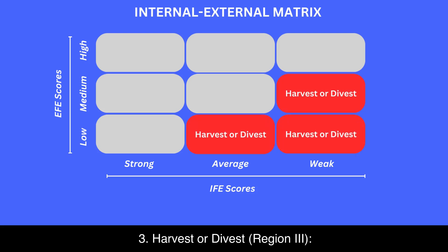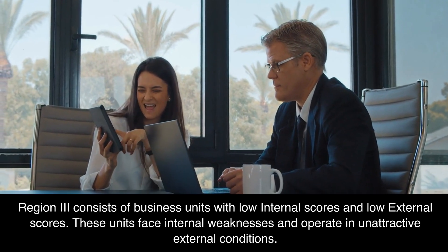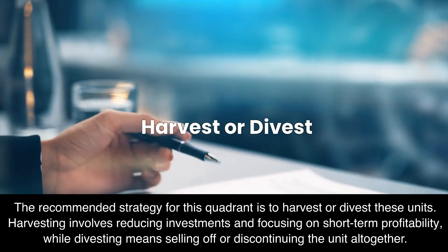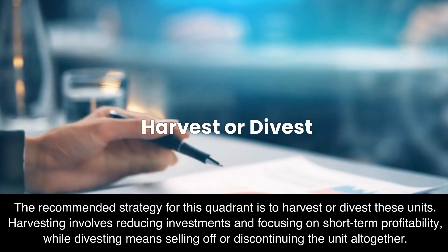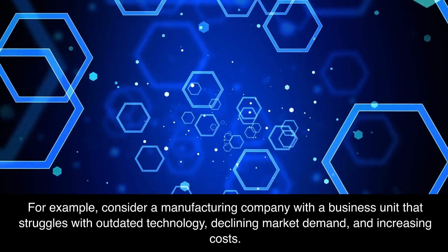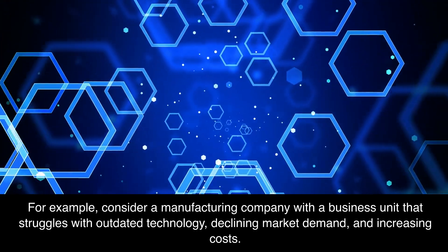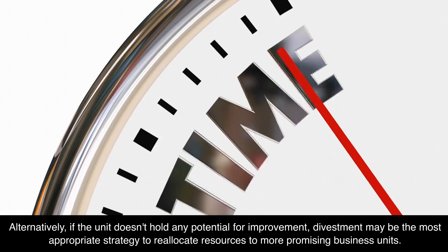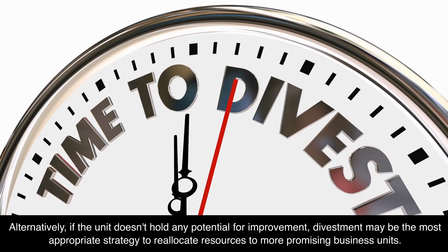Region three — harvest or divest: region three consists of business units with low internal scores and low external scores. These units face internal weaknesses and operate in unattractive external conditions. The recommended strategy is to harvest or divest these units. Harvesting involves reducing investments and focusing on short-term profitability, while divesting means selling off or discontinuing the unit altogether. For example, a manufacturing company with a business unit that struggles with outdated technology, declining market demand, and increasing costs may harvest the unit by reducing expenses, streamlining operations, and extracting maximum value from remaining assets. Alternatively, if the unit holds no potential for improvement, divestment may be the most appropriate strategy to reallocate resources to more promising business units.